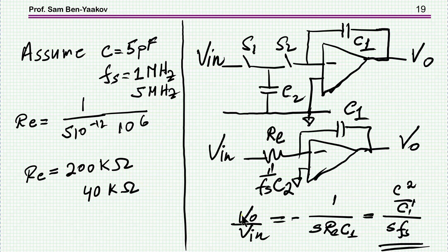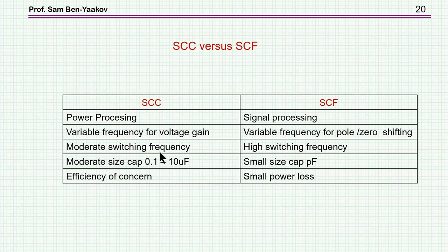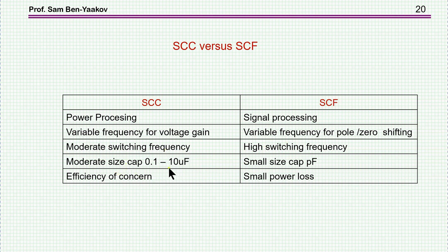Comparing the two technologies: switched capacitor converters handle power processing while switched capacitor filters handle signal processing. Variable frequency is used in both — for voltage gain adjustment in converters (at the cost of efficiency) and for pole/zero tuning in filters. Converters use moderate switching frequencies; monolithic filters can go to very high switching frequencies. Capacitor values in converters are larger, while filter implementations use small capacitors to minimize die area. Efficiency is a key concern in converters but is not a significant issue in filters.